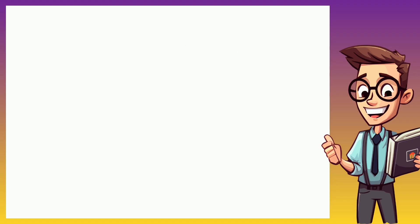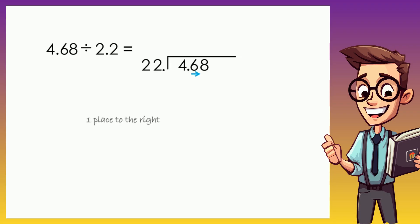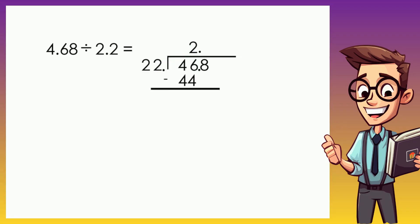Now there are times that no matter what you do the remainder will not become 0. Here's an example: 4.68 divided by 2.2. In long division it will look like this. Since our divisor is not a whole number, we move the decimal point one place to the right. As a consequence we also move the decimal point of the dividend once to the right, then raise the decimal point. We need a number that when multiplied by 22 is closer or equal to 46 — that number is 2, because 2 times 22 is 44. Then we subtract: 46 minus 44 is 2. Next we bring down 8, giving us 28.